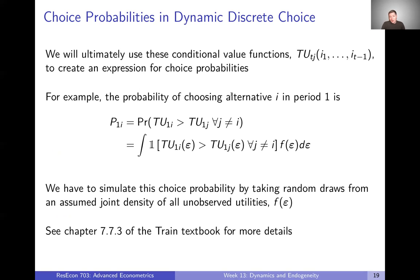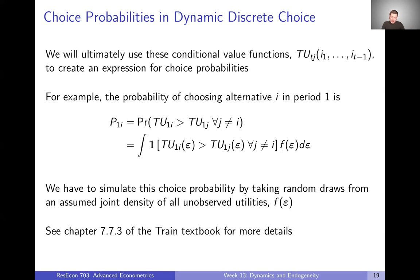Once we have all of these conditional value functions, we can use them to write down choice probabilities. For example, the probability that a decision maker in period one chooses alternative I — after starting in the final period and working all the way back to period one — we now know the total utility for each possible alternative in period one. We do need to make an assumption about how the epsilons are distributed, since each utility has an observable and an unobservable component, and then we simulate these choice probabilities. In theory, this is something we can do, but it becomes very computationally burdensome.